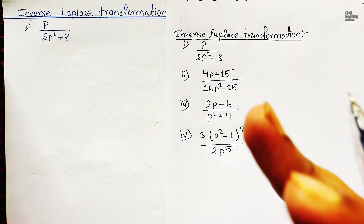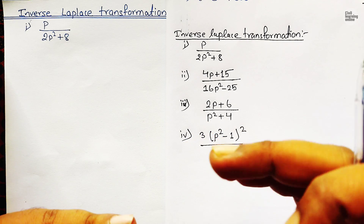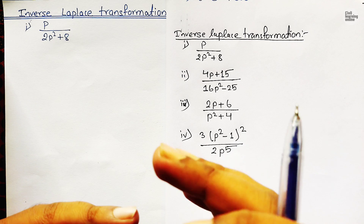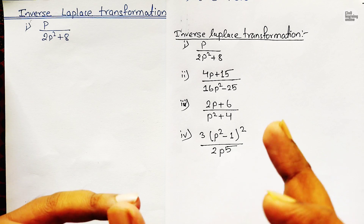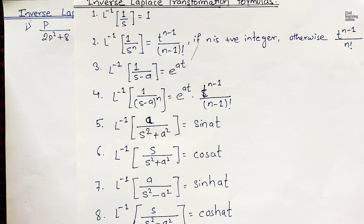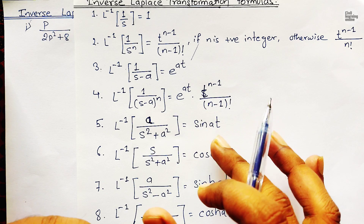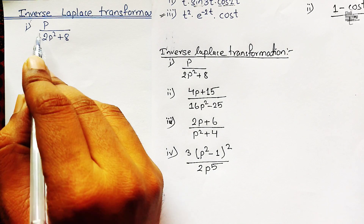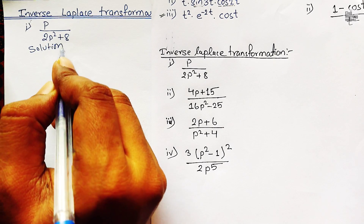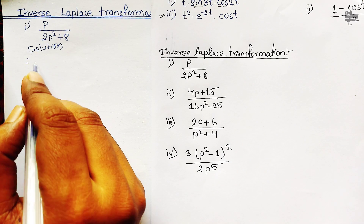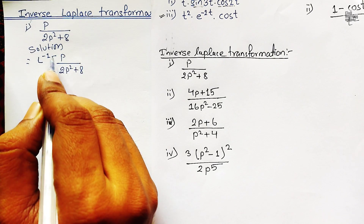Whenever we solve any problem based on inverse Laplace transformation, we must take time to understand the form of the numerator and denominator. We first understand what form the numerator and denominator are provided in, and if possible we factorize the denominator so we can use the formula easily to convert it into a trigonometric or exponential function. So let's write the solution: we are asked to find the inverse Laplace transformation of p/(2p²+8).